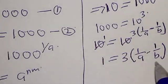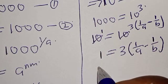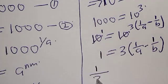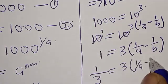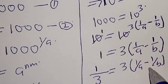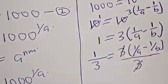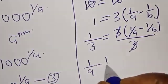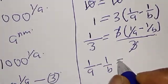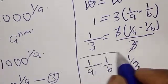We have 1 is equal to 3 times (1 over a minus 1 over b). Now, let's divide both sides by 3 because what we are looking for is 1 over a minus 1 over b. Then we have 1 divided by 3 is equal to 3 times (1 over a minus 1 over b) divided by 3. This one will cancel this, then we have 1 over a minus 1 over b is equal to 1 over 3. That is our final answer.